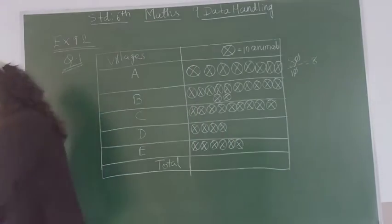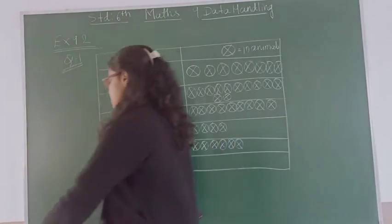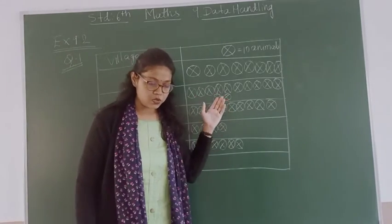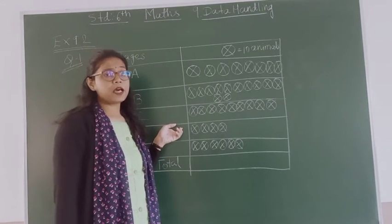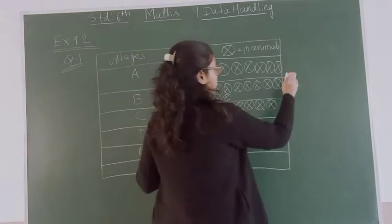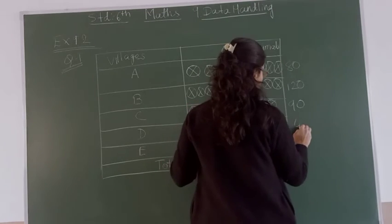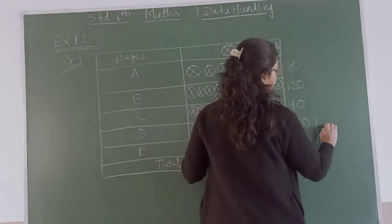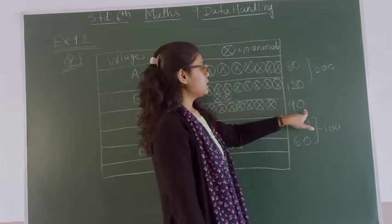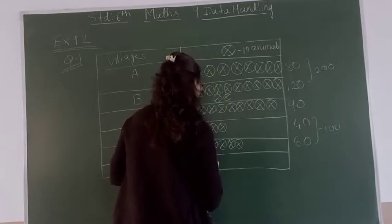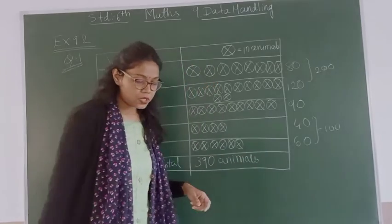Now do the addition of all these animals. There are 80, then 120, so you get 200. 200 plus 90 is 290, plus 40 gives 330, plus 60. Total animals: 390 animals.